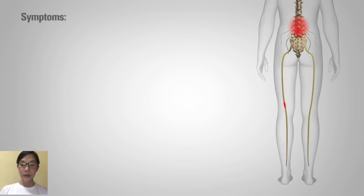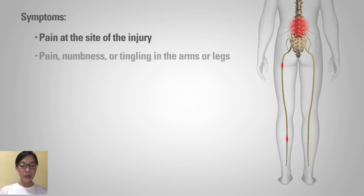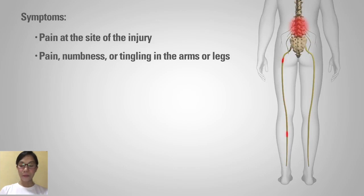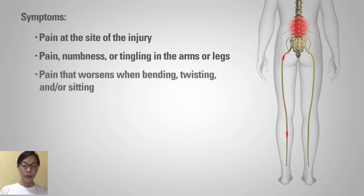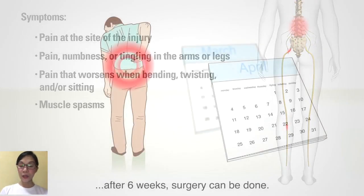Symptoms include pain at the site of injury, pain, numbness, or tingling in the arms or legs, pain that worsens when bending, twisting, or sitting, and muscle spasm.